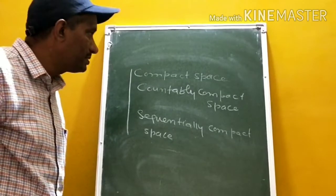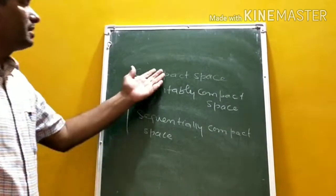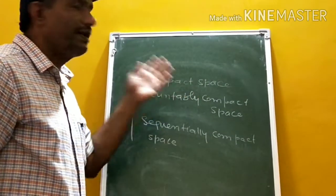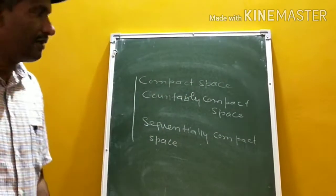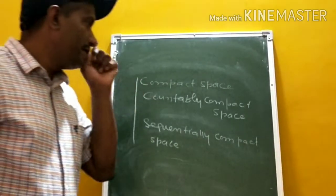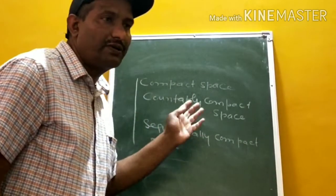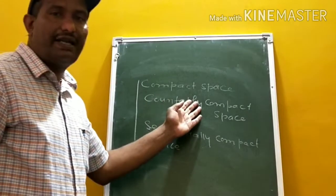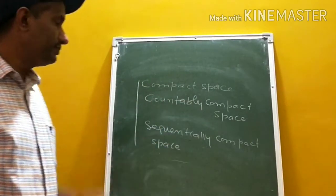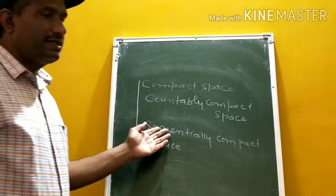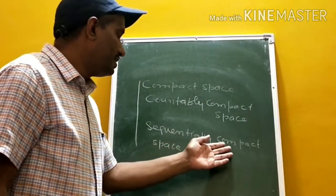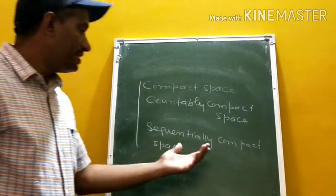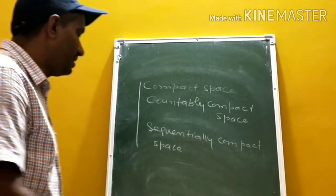A topological space is said to be compact if every open cover has a finite sub-cover. A topological space is said to be countably compact if every countable open cover has a finite sub-cover. A topological space is said to be sequentially compact if every sequence has a convergent subsequence.